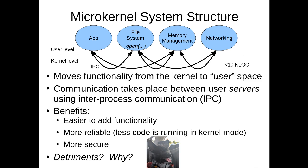The file system itself might require more memory, so it would invoke through IPC the memory management service, and the memory management service would provide it more memory. The general idea is to break apart the kernel into multiple user-level components that can be isolated from each other, and then use IPC to communicate between them. So the functionality moves from the kernel to user space, and servers — or services — like the file system run at user level.